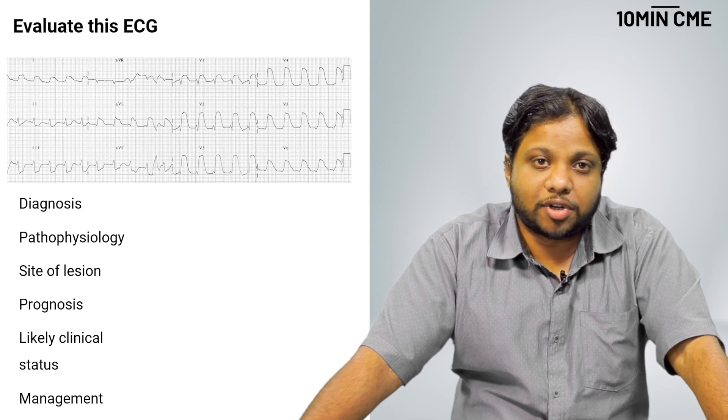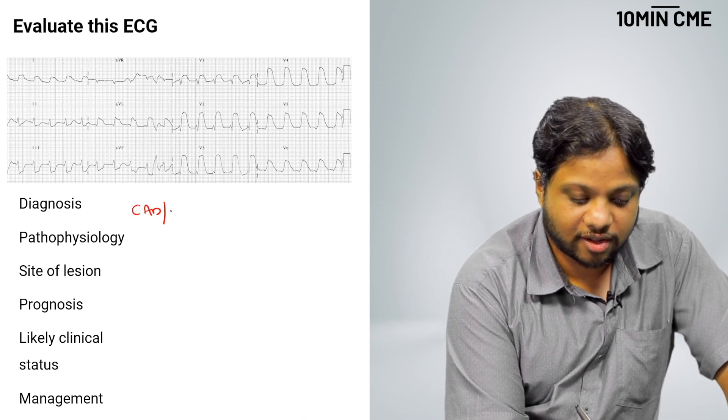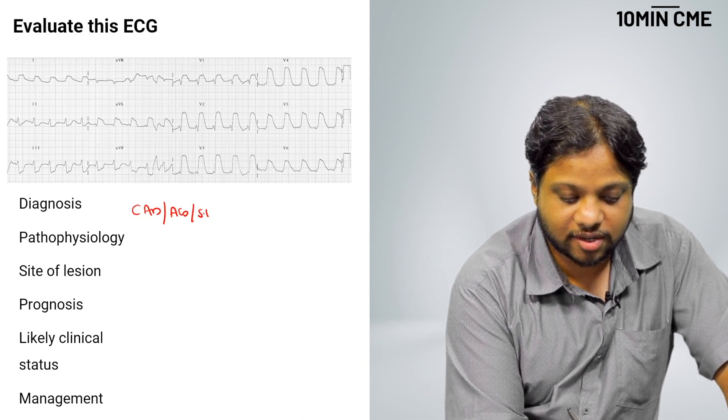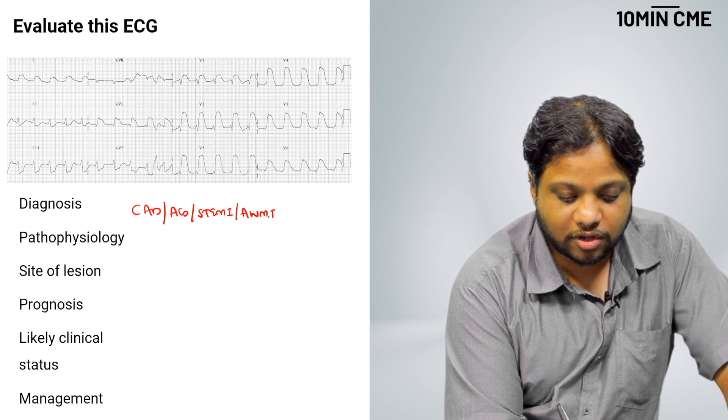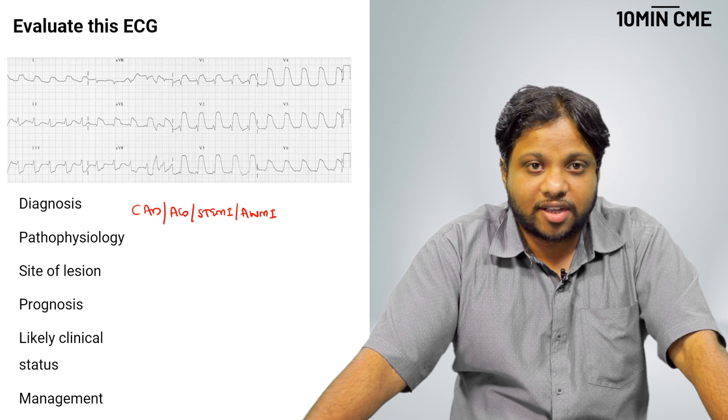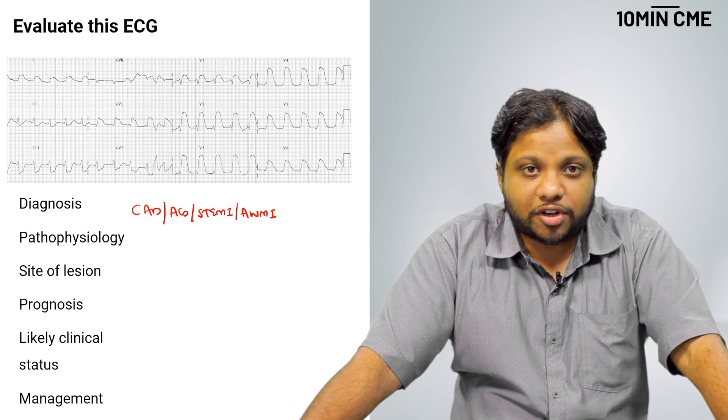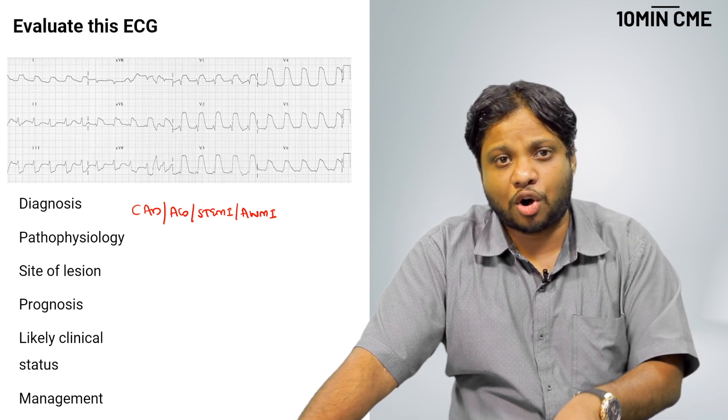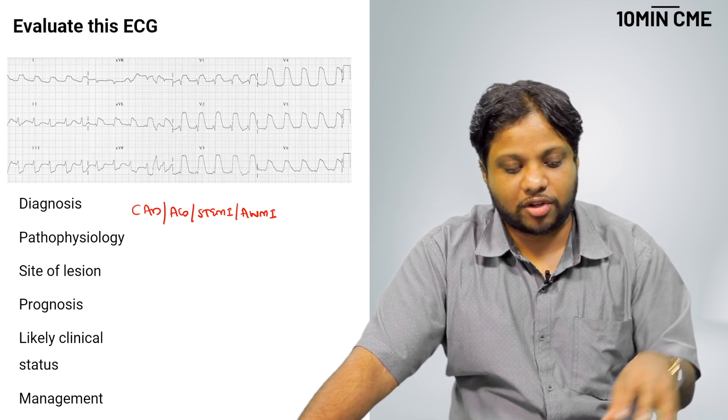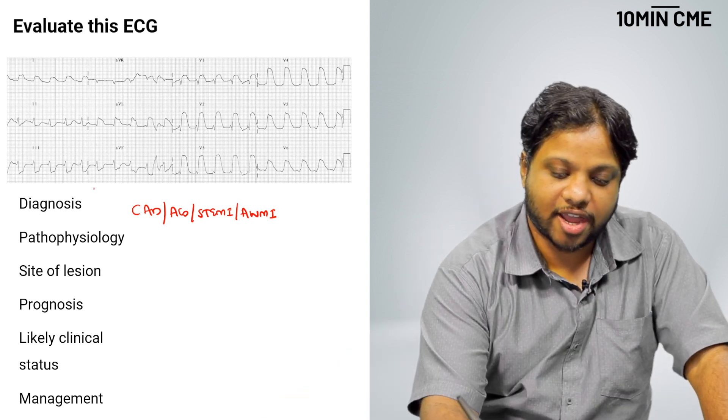The diagnosis is pretty simple. There is no prizes for it. The diagnosis is CAD, ACS, STEMI, anterolateral MI. It is a coronary artery disease. It is an acute coronary syndrome. What type of acute coronary syndrome? It is an ST elevation myocardial infarction. Which wall is involved? It is an anterolateral MI. That is the diagnosis.